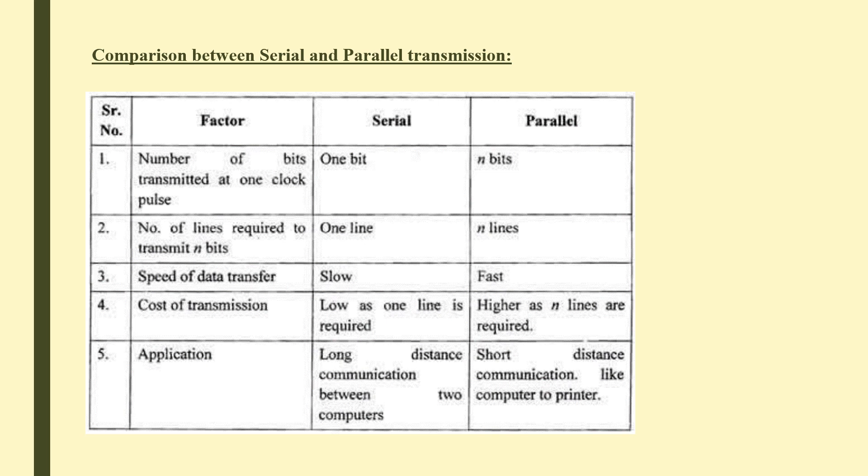Comparing serial and parallel transmission: serial sends one bit per clock pulse using one line; parallel sends n bits per clock pulse using n lines. Serial is slower and lower cost, used for long-distance communication. Parallel is faster and higher cost, used for short-distance communication.